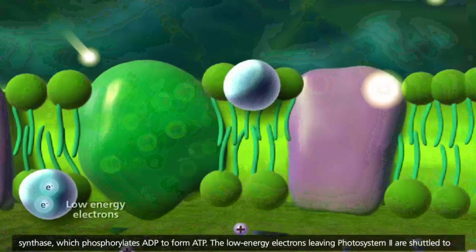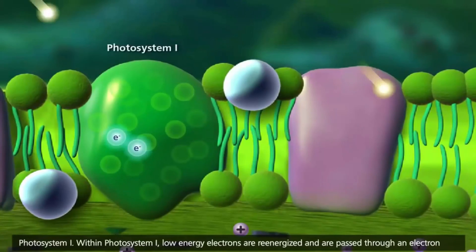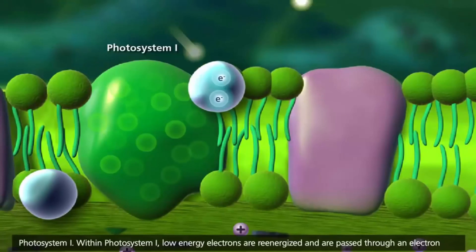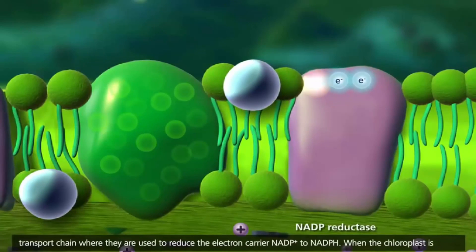The low-energy electrons leaving photosystem II are shuttled to photosystem I. Within photosystem I, low-energy electrons are re-energized and are passed through an electron-transport chain where they are used to reduce the electron-carrier NADP-plus to NADPH.